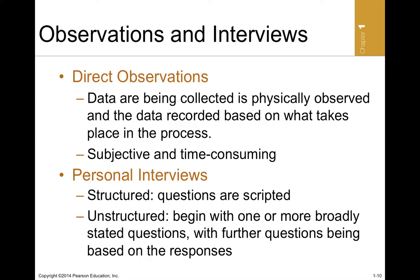The different data collection techniques have advantages and disadvantages. It depends on what kind of data you're collecting, how much data you need, and the level of accuracy you desire. Experiments allow us to have pre-planned objectives and control them, but they can be very costly and time-consuming. Telephone surveys—if you're going to call everybody, it could take a lot of time. It may not be very expensive if you have free telephone calls in the region, but people are often bothered by telephone surveys.